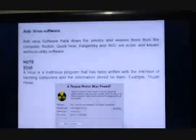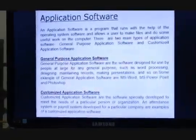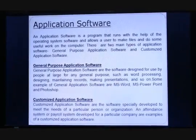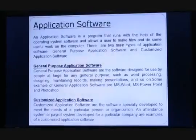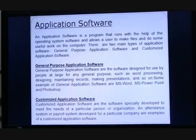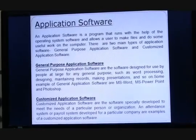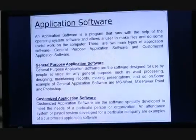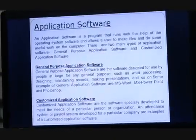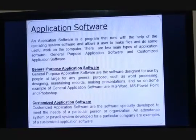Application software is a program that runs with the help of the operating system software and allows a user to make files and do some useful work on the computer. There are two main types of application software: general purpose application software and customized application software. We use these softwares to do work on the computer.